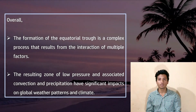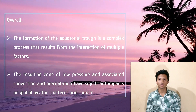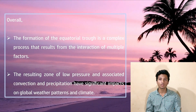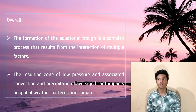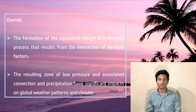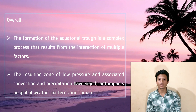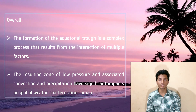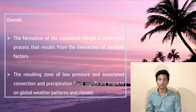Weather patterns occur around the equator and can affect global climate. Overall, the formation of the ITCZ is a complex process that results from the interaction of multiple factors, including solar heating, trade winds, and atmospheric convection.